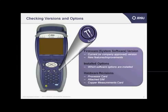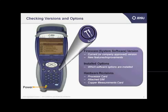Today we're going to be checking underneath the system button, which is under the OK key. After you power on your HST and it goes through its power cycle, you'll see the screen turn on and then you'll press the system button. Under the system button, among other things, you can check the firmware or the system software version for the current or your company-approved version of software.